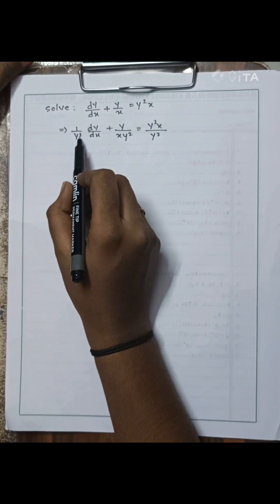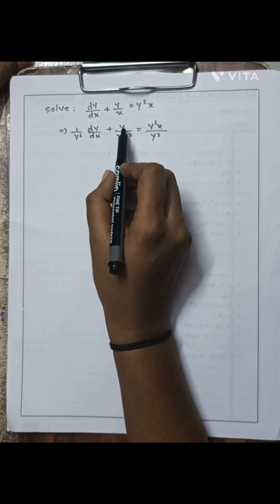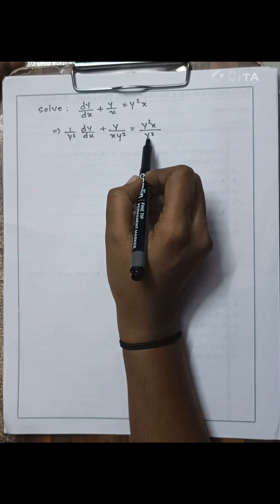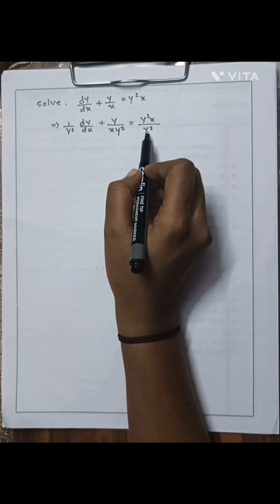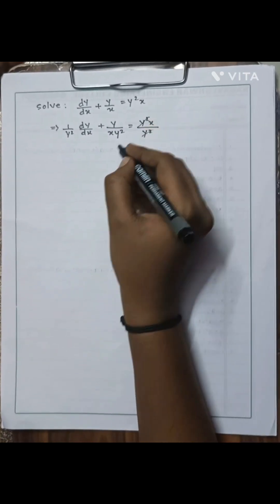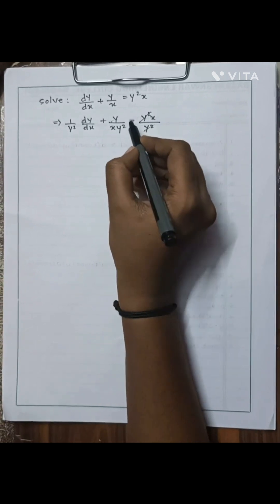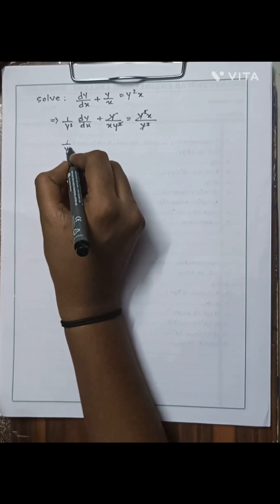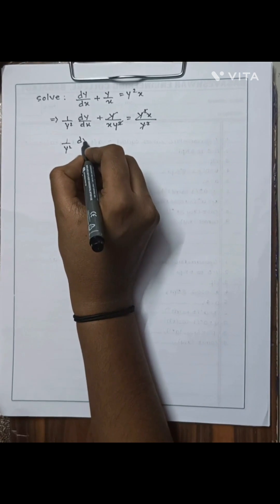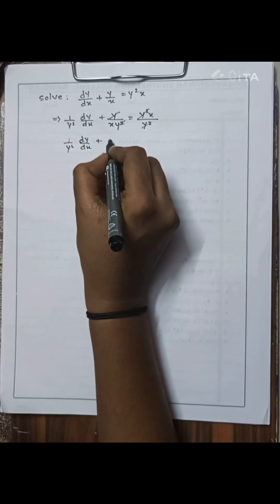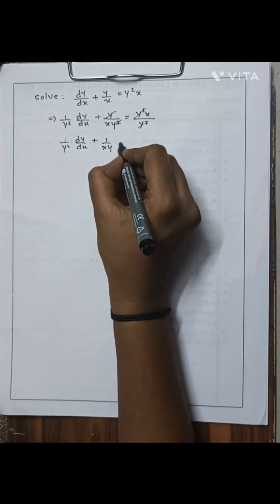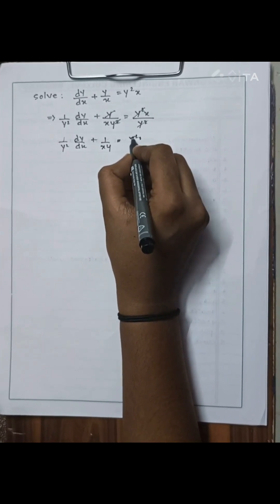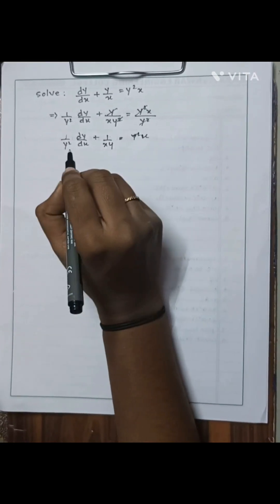Dividing by y², we get (1/y²) dy/dx + y/(x·y²) = y²x/y². Here y² and y² get cancelled, and a single y gets cancelled. Then we get (1/y²) dy/dx + 1/(xy) = x.